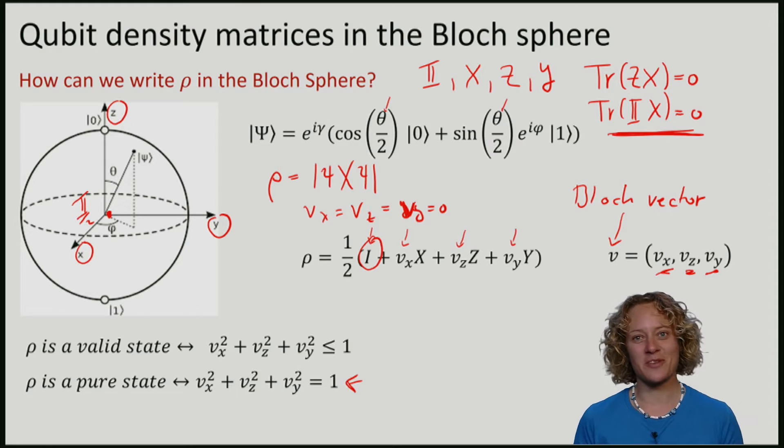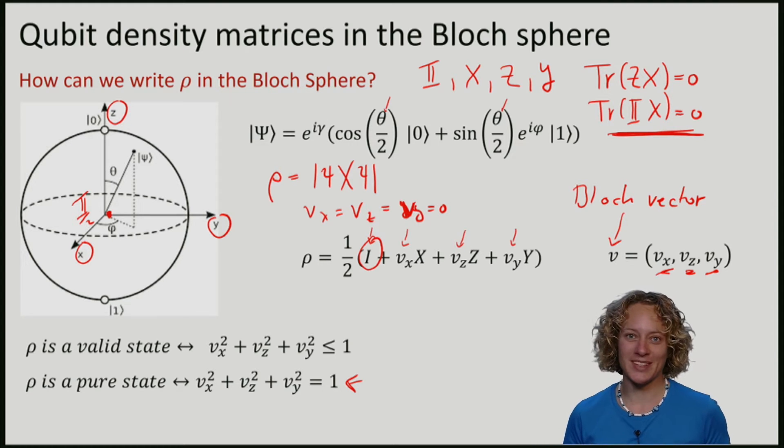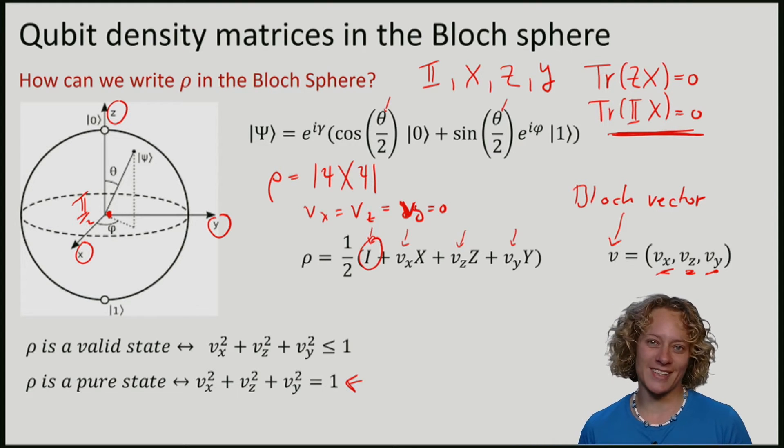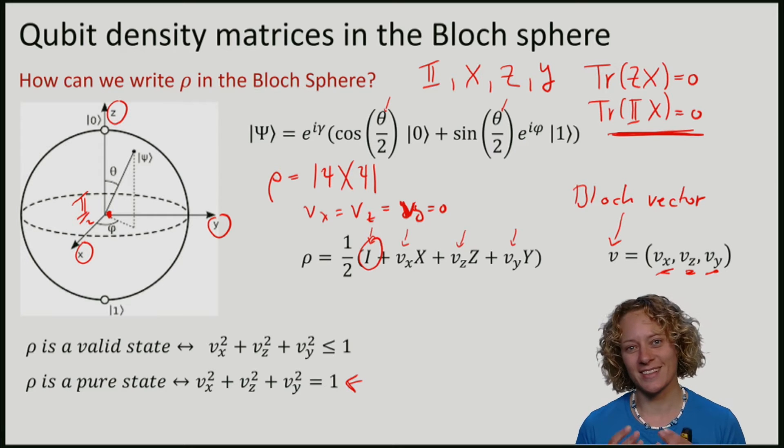The Bloch sphere forms a very nice representation for qubits, and it's also nice when we think about qubits as density matrices.